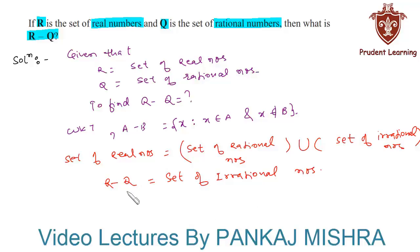Hence our answer is R minus Q is the set of irrational numbers. So this completes our solution.